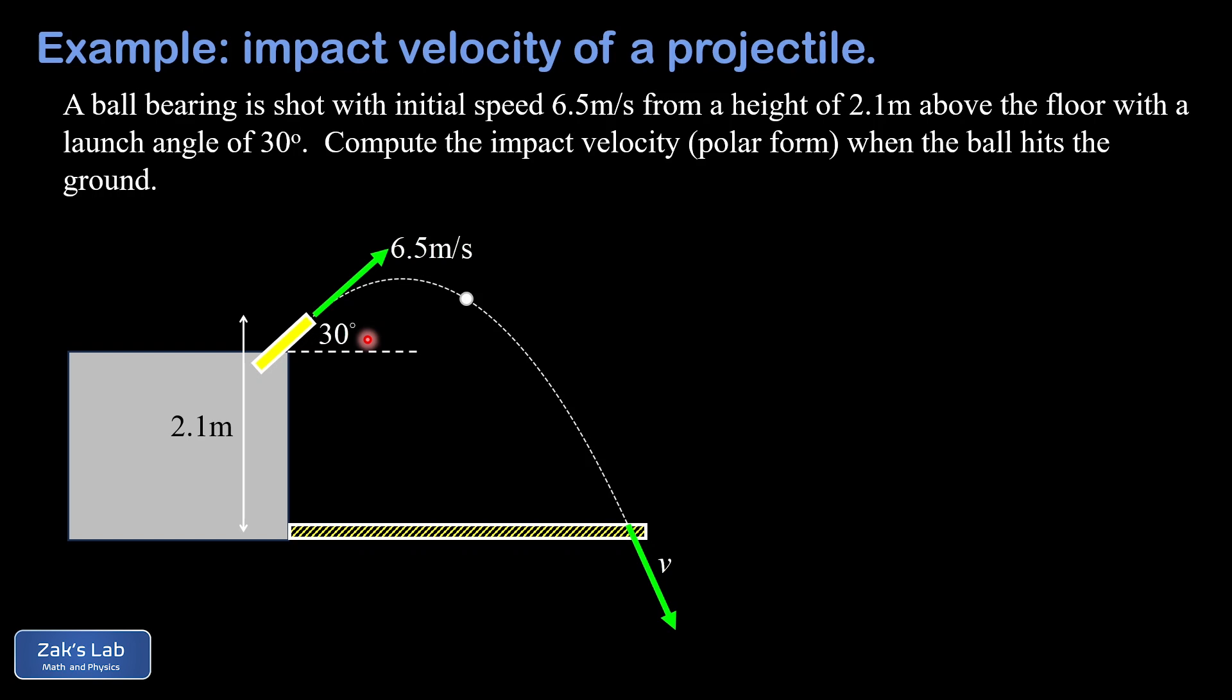We start thinking about what we need to determine this final velocity vector when it hits the ground. The idea is that we need the final velocity components and then we'll do the trigonometry to put those together into polar form.